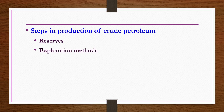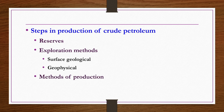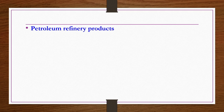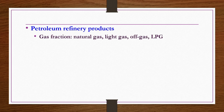Steps in production of crude petroleum: first find the reserves, then exploration using surface geological or geophysical methods, then drilling and yielding as methods of production. Petroleum refinery products are classified by volatility and nature. When drilling, several gas products are also present, including natural gas. The gas fraction includes natural gas, light gas, off gas, and LPG. Light ends include petrol, solvent naphtha, and kerosene and light heating oils.